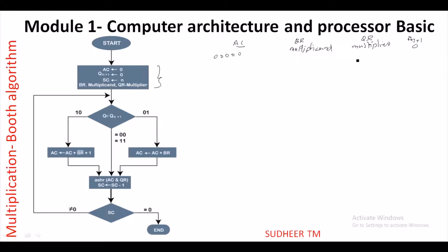We check the multiplier's current bit Qn and the previous bit Qn+1. The operation is Qn+1 minus Qn. If Qn and Qn+1 are both 0 or both 1, the difference is 0: no addition or subtraction — only perform Arithmetic Shift Right (ASHR) of the accumulator AC and QR register. The sequence counter SC is initialized with N (number of bits in the multiplier) and is decremented by 1 each cycle.